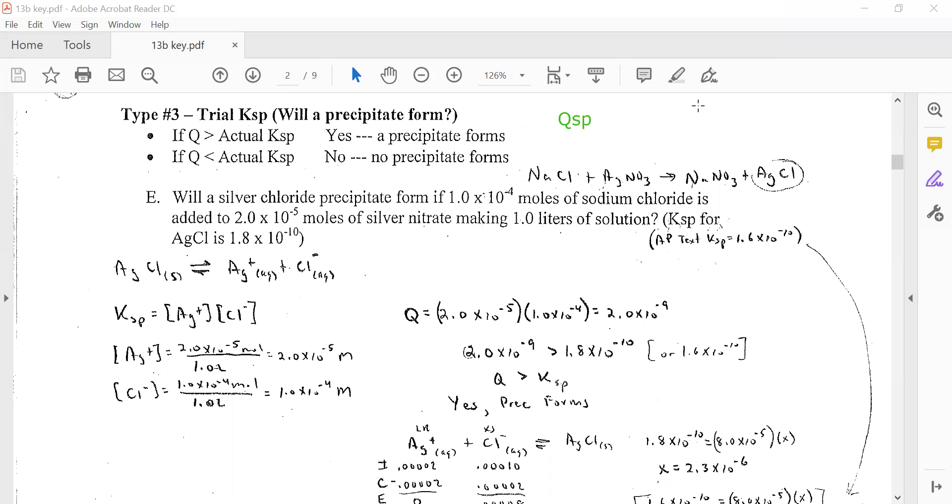NaCl plus AgNO3 forms NaNO3 plus AgCl. NaNO3 is much more soluble than AgCl, so we'll focus on the AgCl. If we had a solid of that, it would break up into Ag+ and Cl-. We'll write the Ksp dissociation equation for AgCl and the Ksp expression, which is Ksp equals [Ag+] times [Cl-].